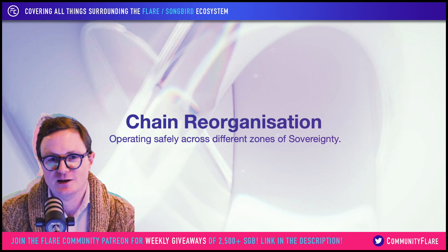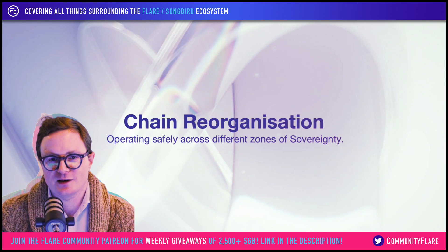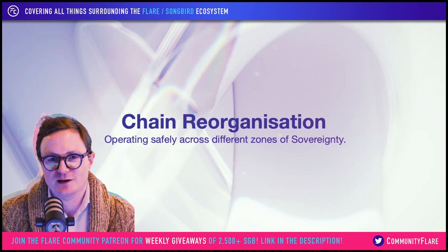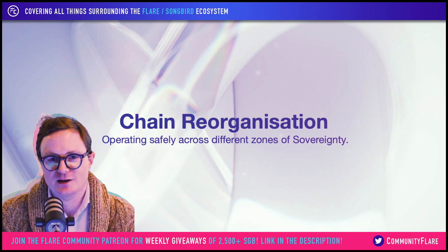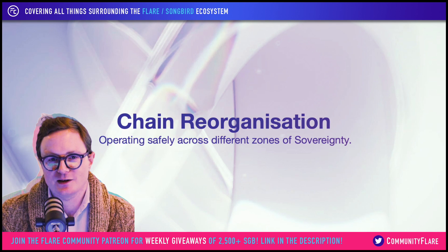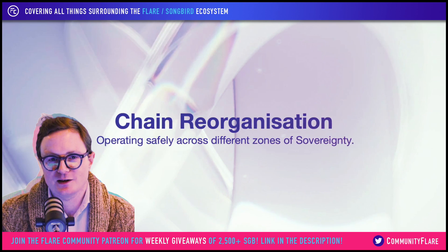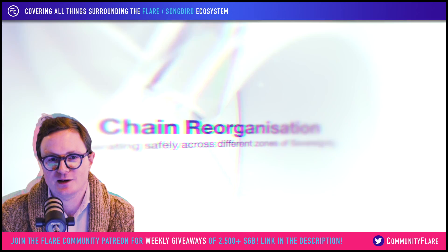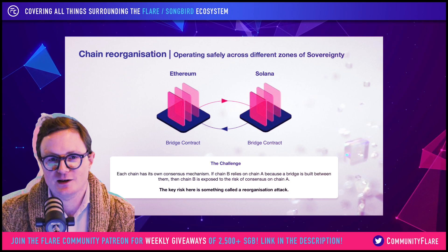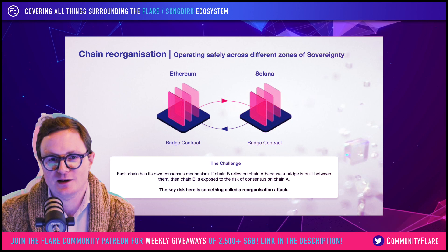This is chain reorganization — operating safely across different zones of blockchain sovereignty. What we mean by sovereignty is essentially that the consensus protocol of each chain has its own rules. And therefore, each chain that is connected to another chain is essentially receiving the output of those consensus rules on the other chain.